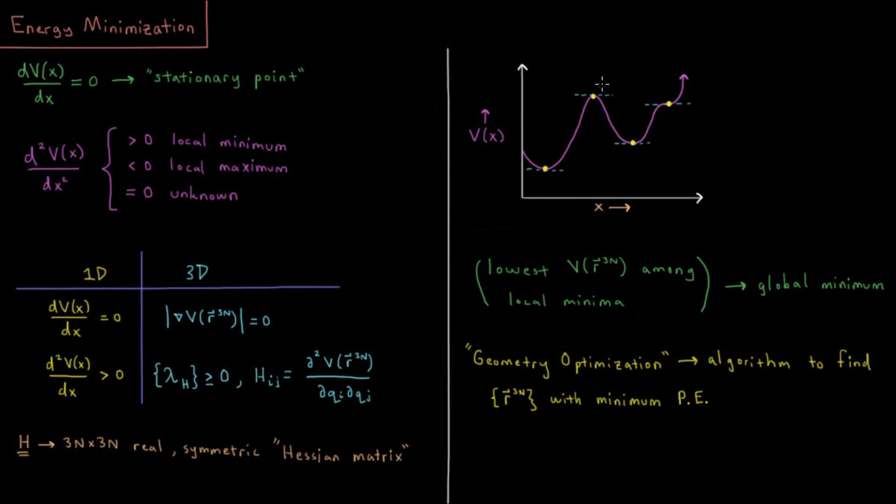So for example, in this function, if these were the only two minima in the function, then these each are local minima because they are the lowest point in their respective regions. But this point here is the global minimum in addition to being a local minimum.